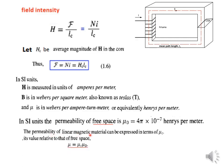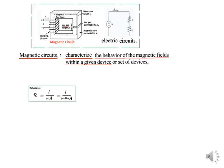The permeability of a linear magnetic material can be expressed in terms of mu-r, its value relative to free space. So mu equals mu-r times mu-naught, where mu-r is the relative permeability of the material. A magnetic circuit can be assumed similar to an electrical circuit because all flux lines flow inside the core, just as currents flow through a conductor. The magnetic circuit characterizes the behavior of the magnetic fields within a given device or set of devices.